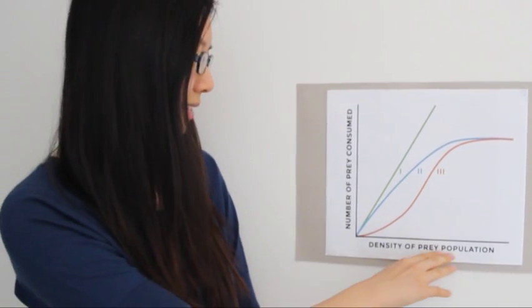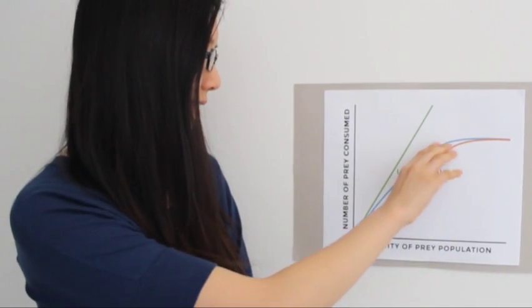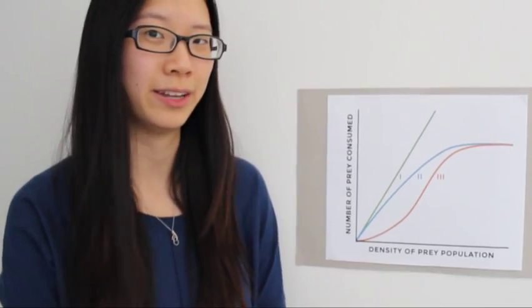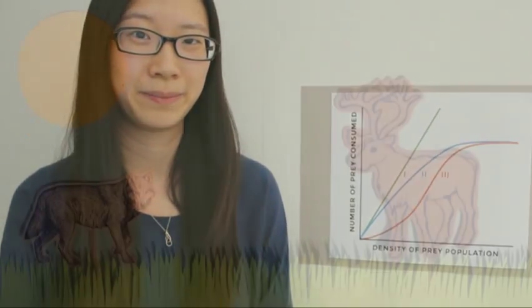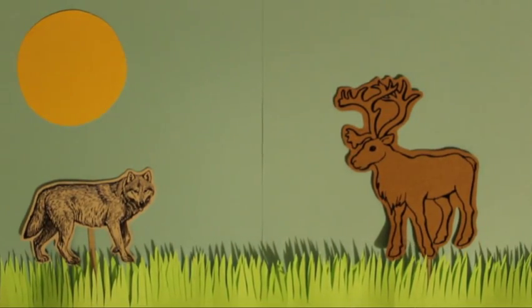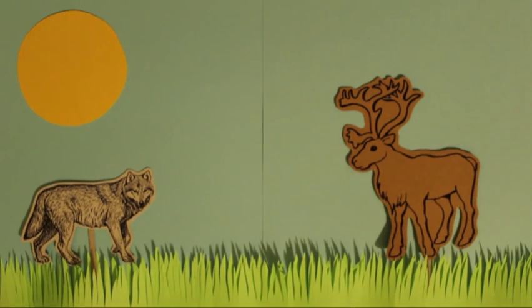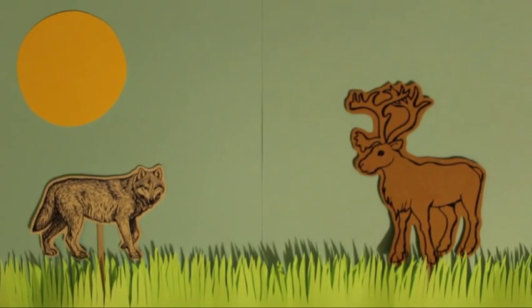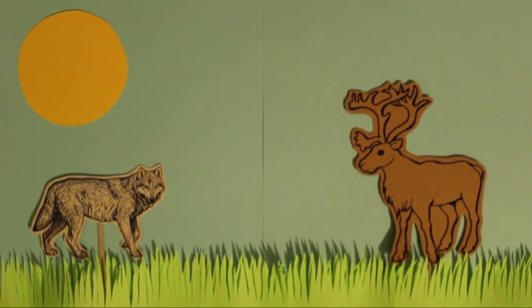As the density of prey increases, the predator is already eating as many prey as possible and cannot search for any more. The functional response of wolves preying on caribou is a type 2 functional response.